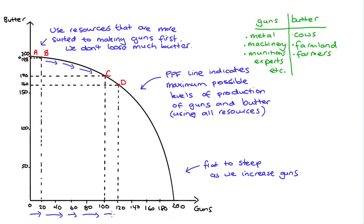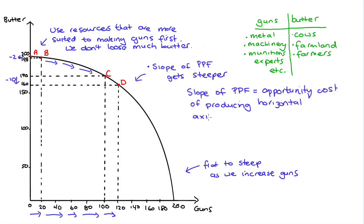Moving from C to D, for instance, we're again increasing guns by 20 — from 100 to 120 — but we lose 10 butter, from 170 to 160, instead of the 2 butter we lost from A to B. And we will lose butter at an increasing rate as the PPF gets steeper. As I detail in another video — I'll link to it below — the slope of the PPF is equal to the opportunity cost of producing the horizontal axis good, in this case guns. So that the slope is increasing means the opportunity cost of making guns increases as we make more guns.